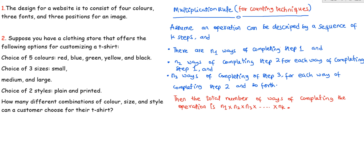Welcome to this lesson. In this video, I'm going to cover the multiplication rule for counting techniques. Assume an operation can be described by a sequence of k steps. There are n1 ways of completing step one, n2 ways of completing step two for each way of completing step one, n3 ways of completing step three for each way of completing step two, and so forth. The total number of ways of completing the operation is n1 times n2 times n3 all the way to nk.